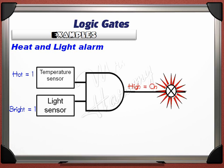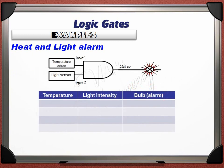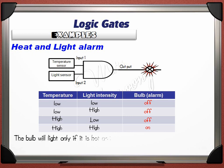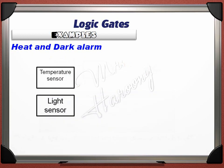The logic table of this alarm circuit: low temperature and low light — bulb OFF; low temperature and bright light — bulb OFF; high temperature and low light — bulb OFF; high temperature and high light — bulb ON. The bulb lights only if it is hot and bright; otherwise the bulb is off. This is the heat and light alarm.